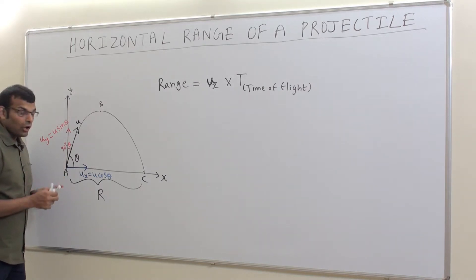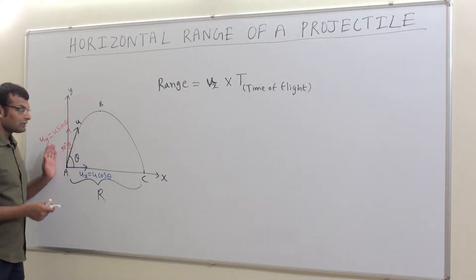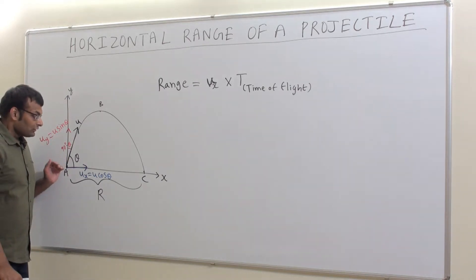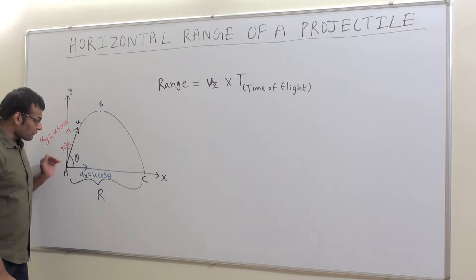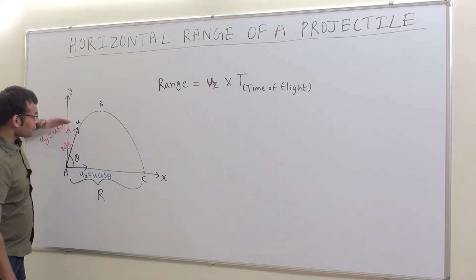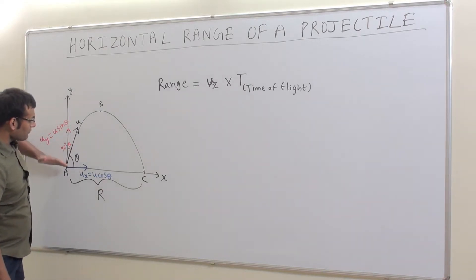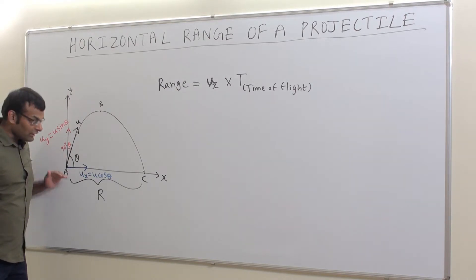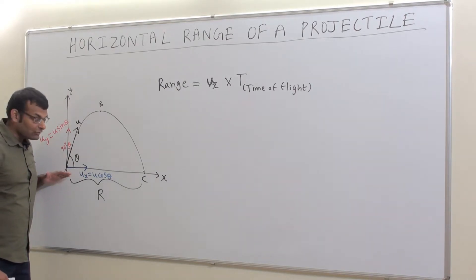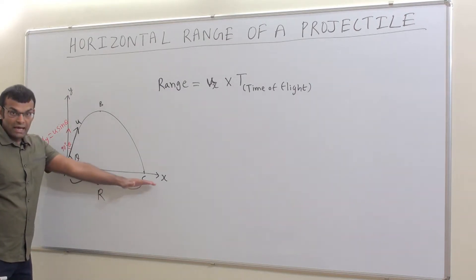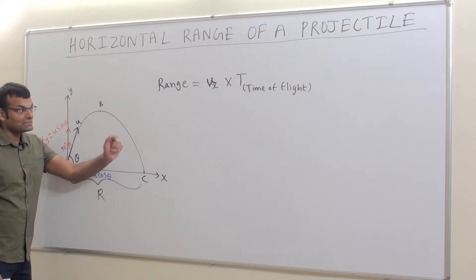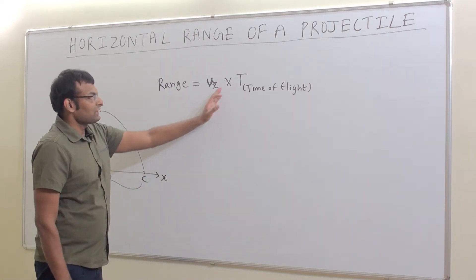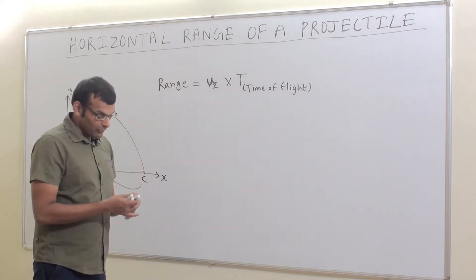Why are we not taking the velocity in the vertical direction? Because, though the vertical direction is responsible for moving the ball along the y-axis, the range we are calculating lies on the x-axis. That is the exact reason we write ux times time of flight.